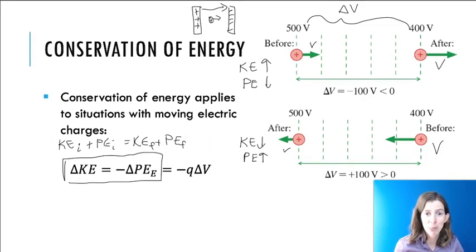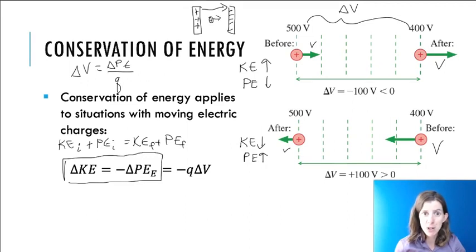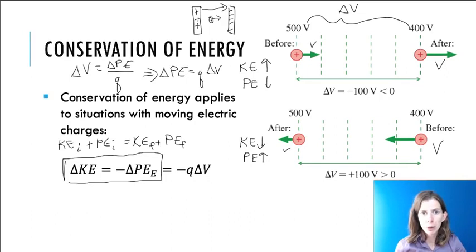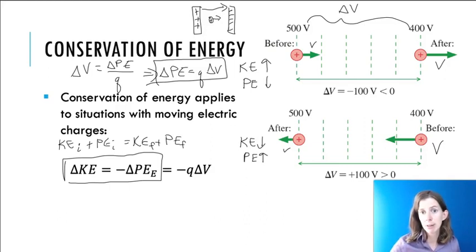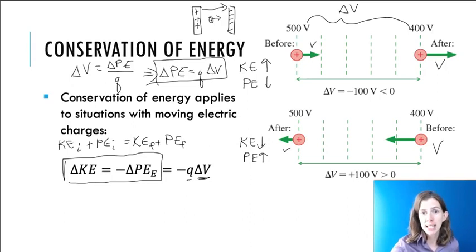So any questions about that, make sure to put them in the comments. We learned previously that the change in potential was the change in potential energy per charge. If we rearrange this, it gives us that the change in potential energy equals q delta V. We will use it in this form very often. This means that since the change in kinetic energy is the negative of that, the change in kinetic energy equals negative q delta V. So using this equation, if we know that a charge is moving through a certain potential difference, then we can find the change in kinetic energy of that charge.